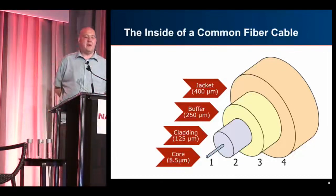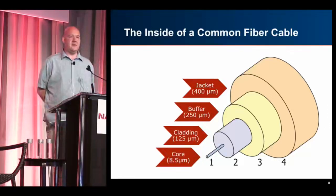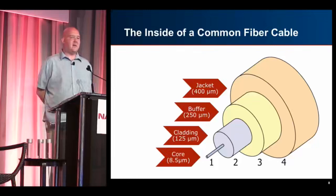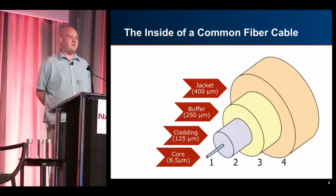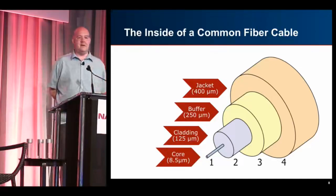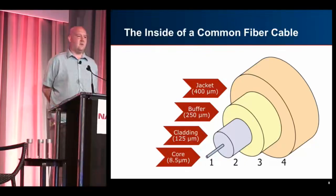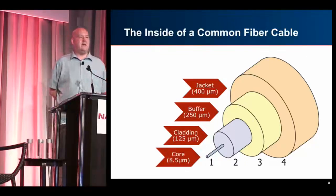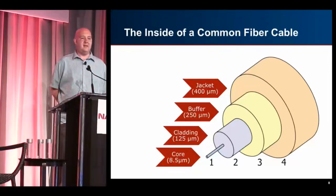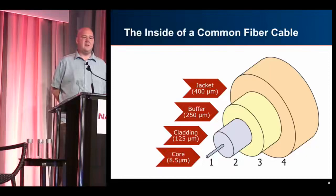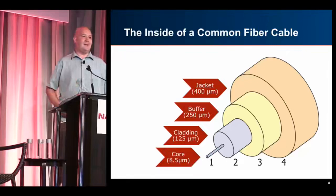Inside a common single-mode fiber cable, the core itself is 8.5 microns — very small. The cladding, which is still part of the glass but not where the signal is carried, is much thicker and surrounds the core. Then you've got an internal buffer that protects the fiber itself, and then an outer jacket. The buffer can move around inside the jacket; there might be some strength members in there, but it's all done to protect the fiber and prevent it from snapping. Essentially it's just a tiny, hair-thin piece of glass.